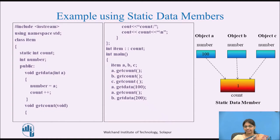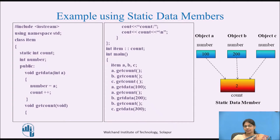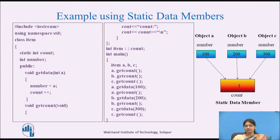Similarly, object b invokes getData, assigning 200 to the data member number of object b and incrementing count to 2. Object b then invokes getCount, displaying count as 2. Next, object c invokes getData with 300, assigning 300 to the data member number of object c and incrementing count to 3. Object c then invokes getCount, displaying count as 3. This example illustrates how static data members are shared and updated by different objects in a program.